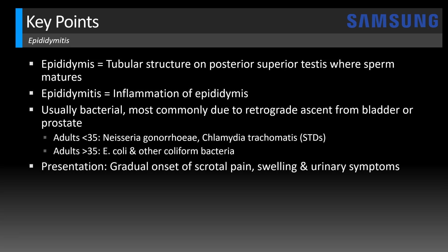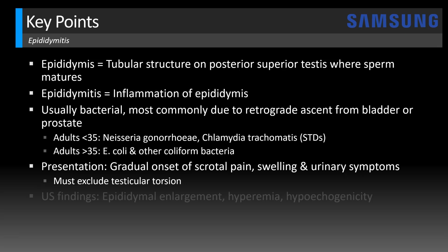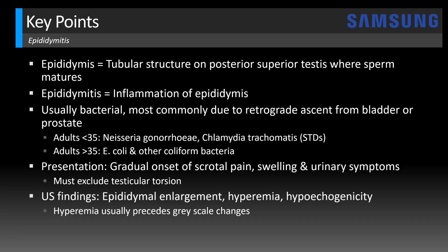The presentation is variable — usually there's a gradual onset of scrotal pain with swelling and urinary symptoms like dysuria. Even though the onset of pain is usually more gradual than the acute symptoms of testicular torsion, torsion is still in the differential and must be excluded. Ultrasound findings of epididymitis include epididymal enlargement, hyperemia, and hypoechogenicity of the epididymis. Usually that hyperemia will precede the grayscale changes, meaning with early epididymitis you might just see increased vascularity but otherwise a normal grayscale appearance — so this case was a bit more advanced.